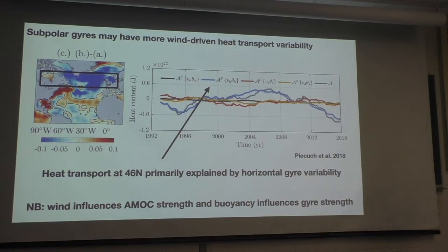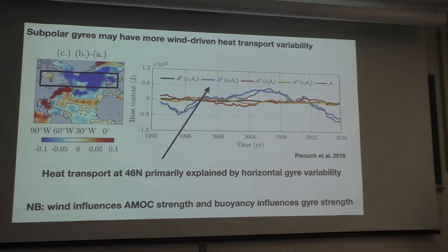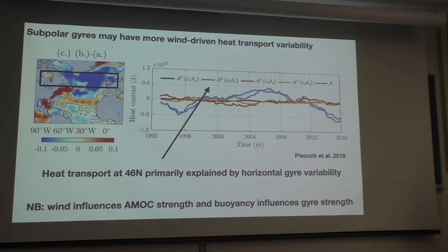There are also papers with a counter-narrative. One by Chris Peikusch focuses on ECCO and looks at heat content in this area, finding that heat transport across a particular line seems to be primarily explained by the gyre, using a specific method I'll discuss later. This highlights that there's still some disagreement about whether the gyres or the overturning are more important, and also suggests a handoff: depending on what latitude you choose, you might find the overturning or the gyres dominating. We really want to understand what's going on with overturning versus gyres.